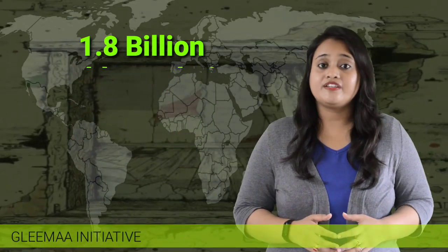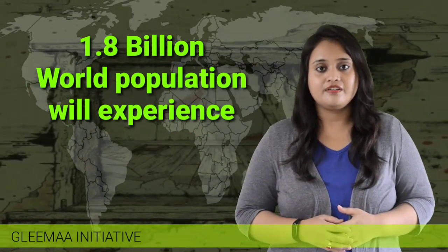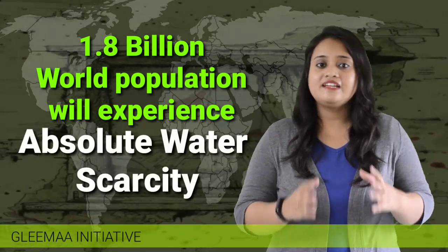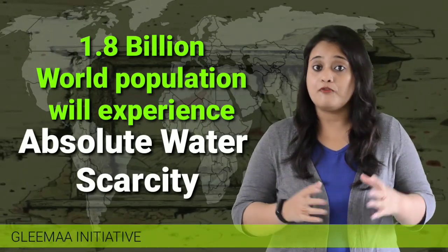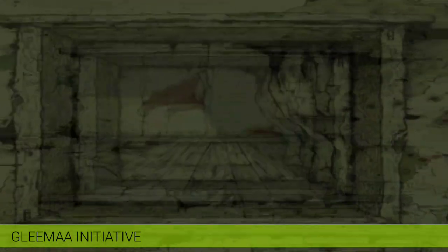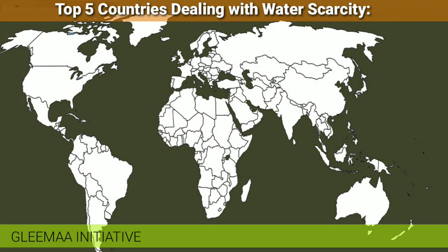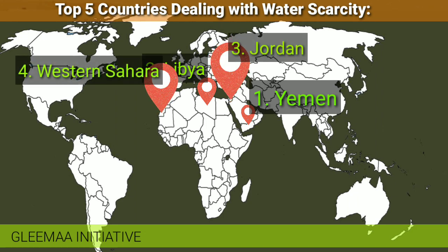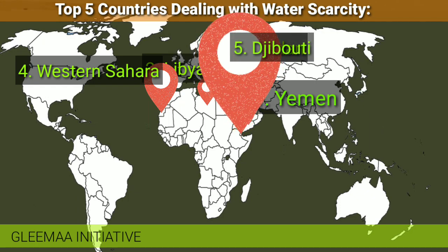It is estimated that in around 2 to 3 years, about 1.8 billion of the world's population will experience absolute water scarcity — meaning there will be little to no usable water on Earth. Here are the top 5 countries currently dealing with severe water scarcity: Number 1, Yemen; Number 2, Libya; Number 3, Jordan; Number 4, Western Sahara; Number 5, Djibouti.